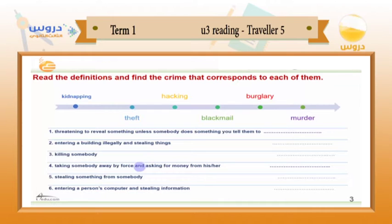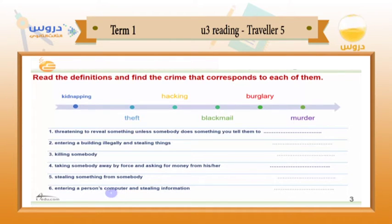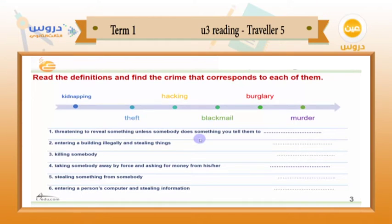Number four: taking somebody away by force and asking for money from his or her family. Number five: stealing something from somebody — what is the right word? And the final sentence: entering a person's computer and stealing information. Is it kidnapping, theft, hacking, or blackmail? What is the right word for each sentence? I suppose you can get at least two of those sentences right.